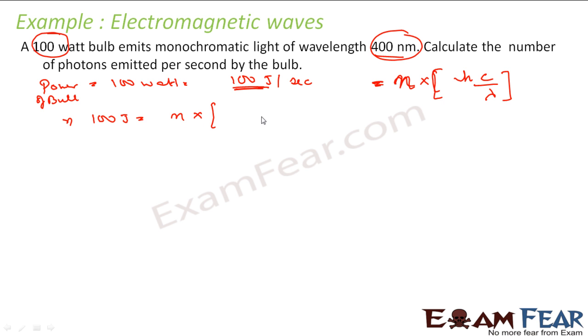So what you get is 100 joules in one second. It is nothing but n which is the number of photons into hc by lambda. H is 6.626 × 10^-34 joules per second. C speed of light 3 × 10^8 meter per second. Please note the units, I am putting everything in meter, seconds, joules.